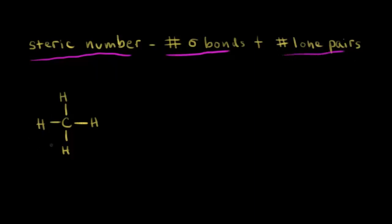Let's go ahead and do it for methane. The steric number is equal to the number of sigma bonds. I look around my carbon and I see one, two, three, and four sigma, or single bonds — so I have four sigma bonds. I have zero lone pairs of electrons around that carbon. So four plus zero gives me a steric number of four.